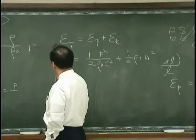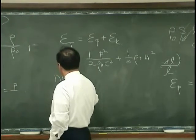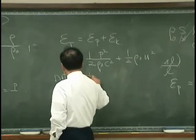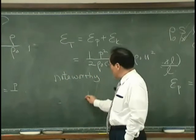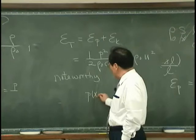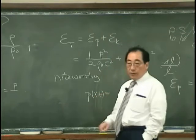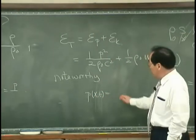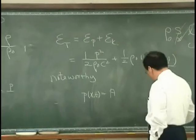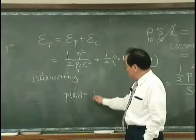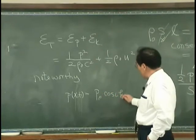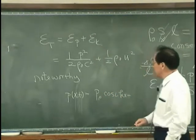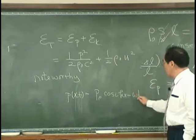And it is noteworthy that one dimensional case, the pressure, for example, can be written as P or P0 cosine KX minus omega T.